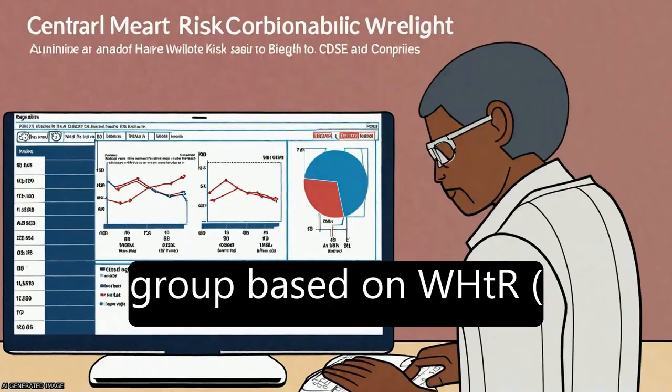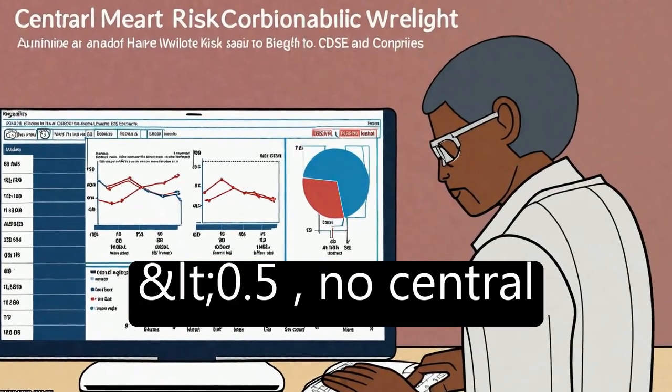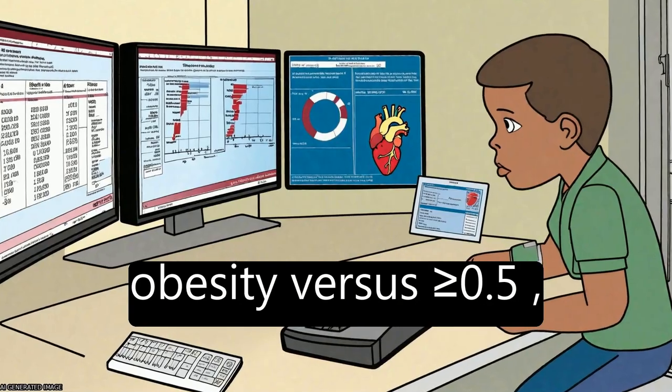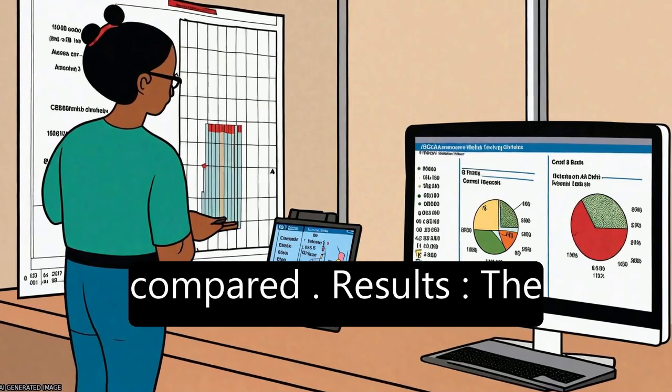The risk profiles of each group based on WHTR, less than 0.5 (no central obesity) versus greater than or equal to 0.5 (central obesity), were compared.